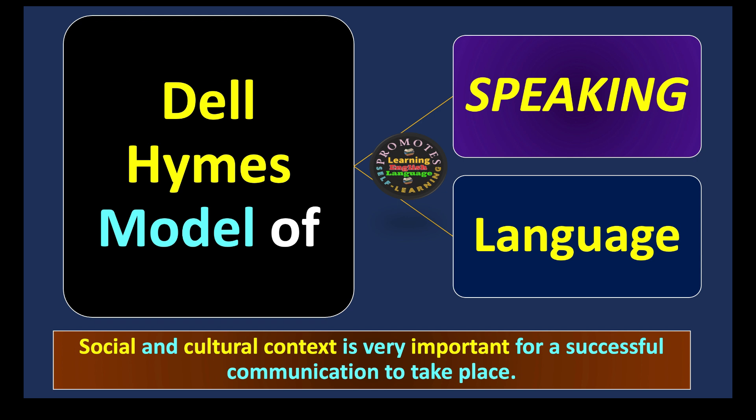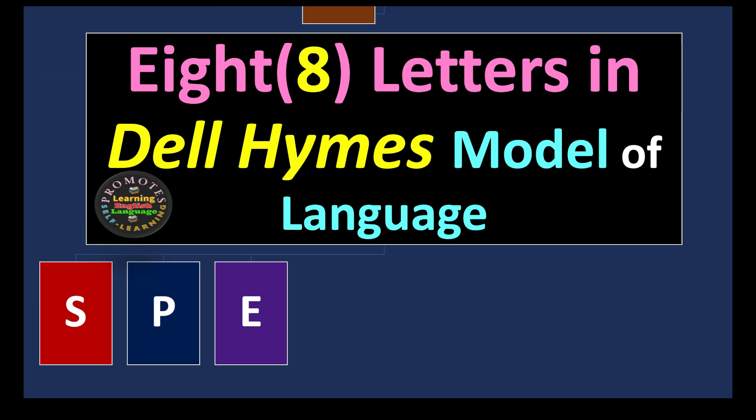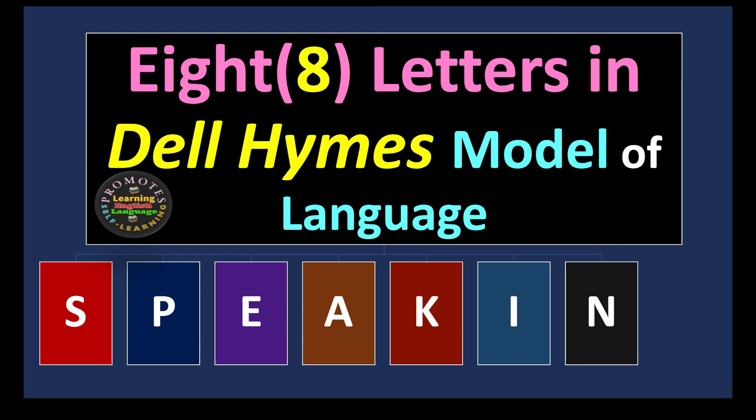Social and cultural context is very important for successful communication to take place. In Delhiem's model of language, we have eight important letters: S, P, E, A, K, I, N, and G — and if you put each one of them together it becomes SPEAKING. So it's a model of language, a function of language.